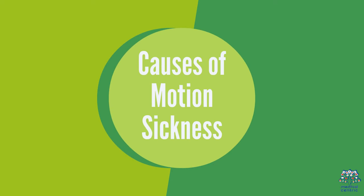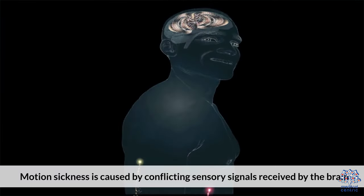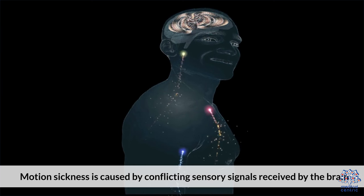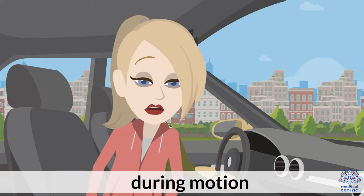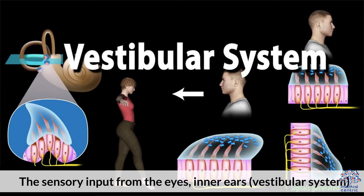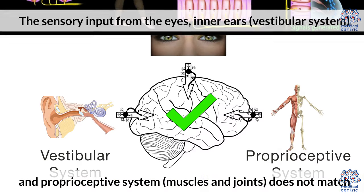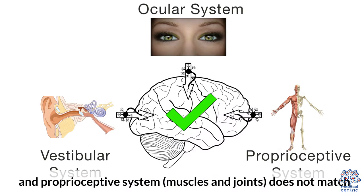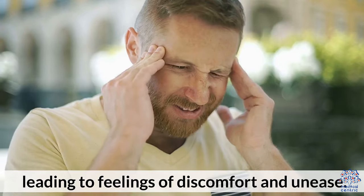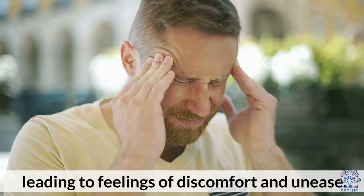Causes of Motion Sickness. Motion sickness is caused by conflicting sensory signals received by the brain during motion. The sensory input from the eyes, inner ears, vestibular system, and proprioceptive systems — muscles and joints — does not match, leading to feelings of discomfort and unease.